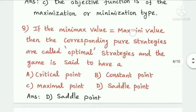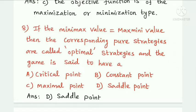Next question: if the minimax value equals the maxmini value, then the corresponding pure strategies are called optimal strategies, and the game is said to have a — critical pointer, constant pointer, maximal pointer, or saddle pointer. Option D is the answer: saddle pointer.